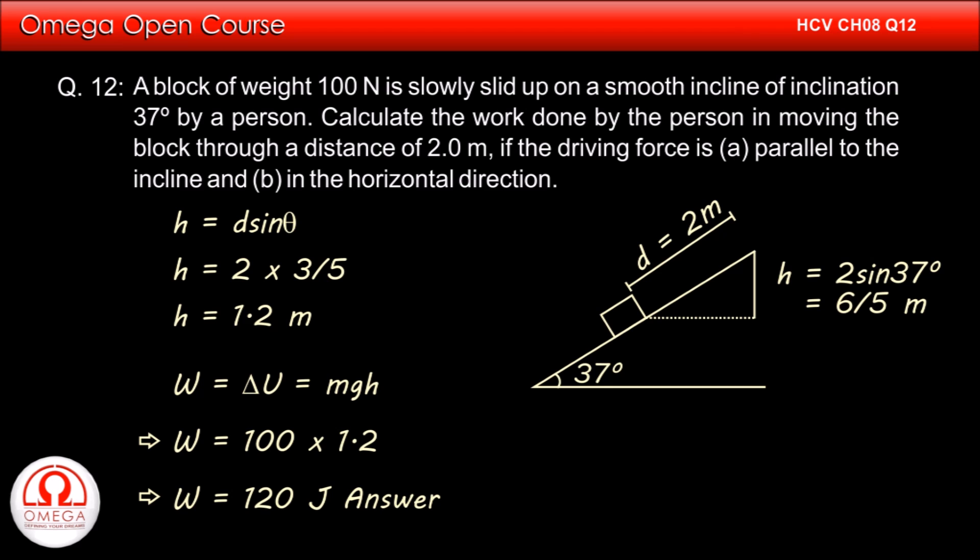In part B too, even though the force is applied in the horizontal direction, the increase in height of the block is the same and hence the increase in potential energy is also the same. So the work done in that case too is 120 joules. This is the answer to part B of the question.